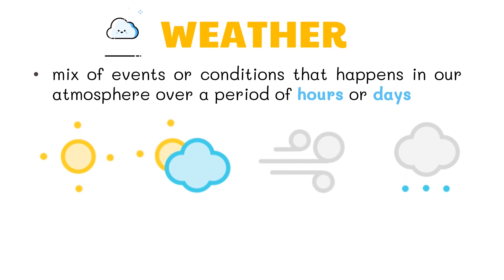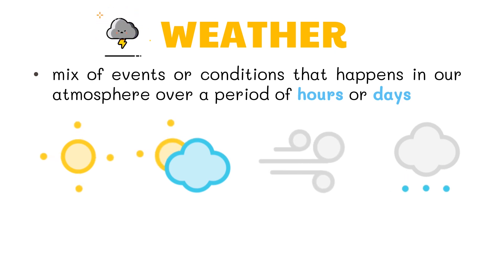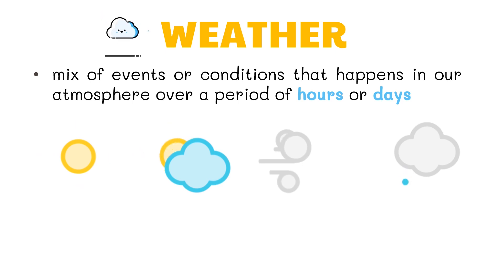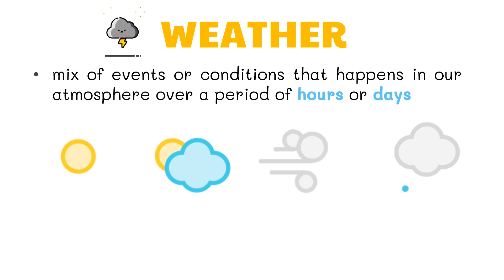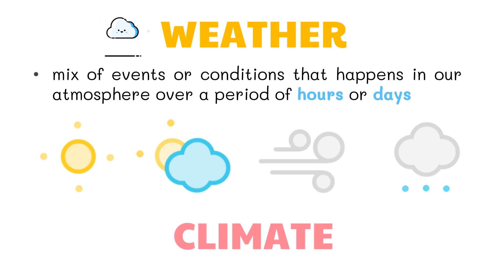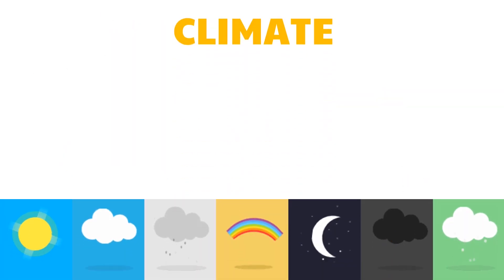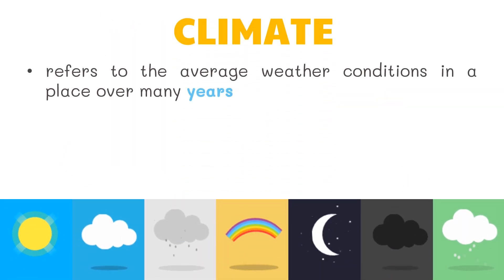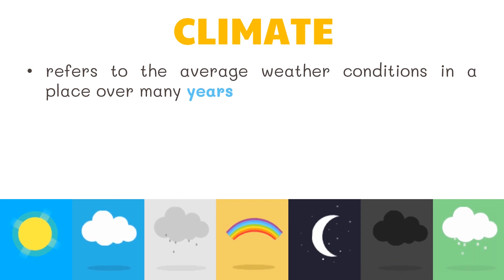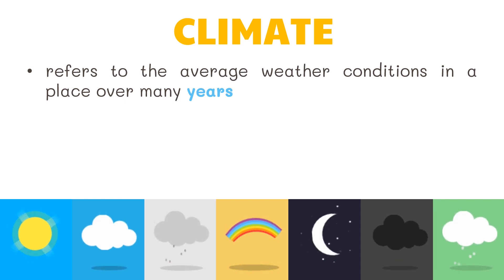For example, the area you live in might have a warm summer this year and a much warmer summer next year. This kind of change is normal, but when the average pattern over many years changes, it is now called climate. Climate refers to the average weather conditions in a place over many years.